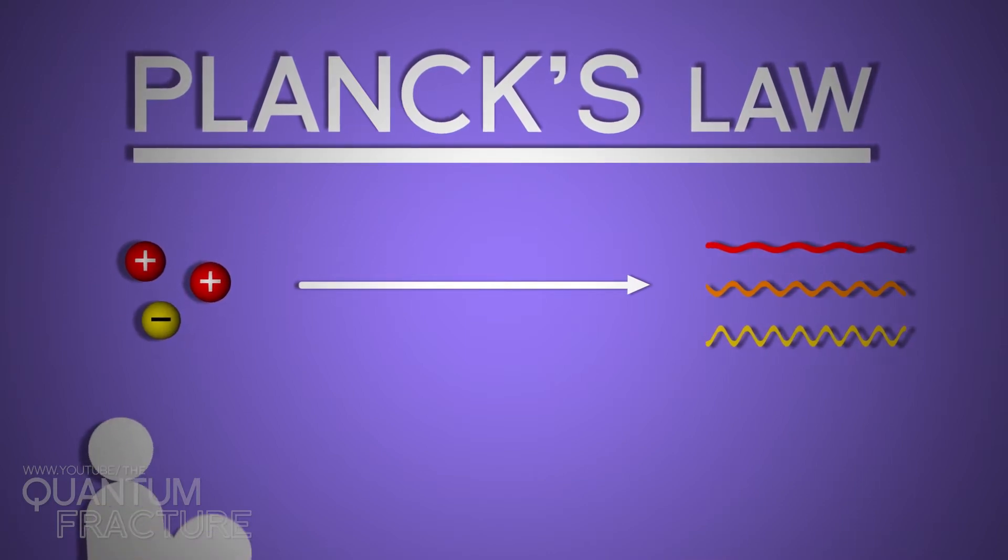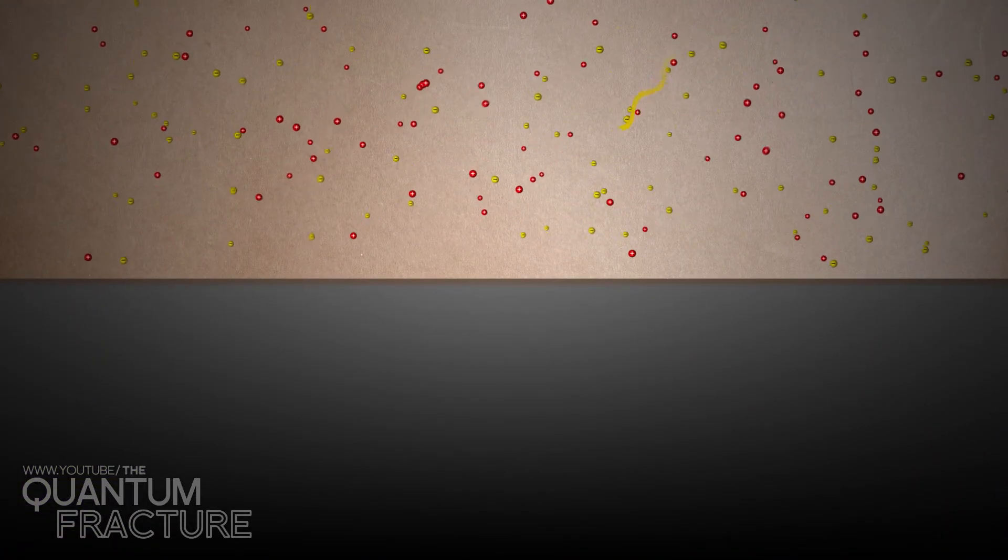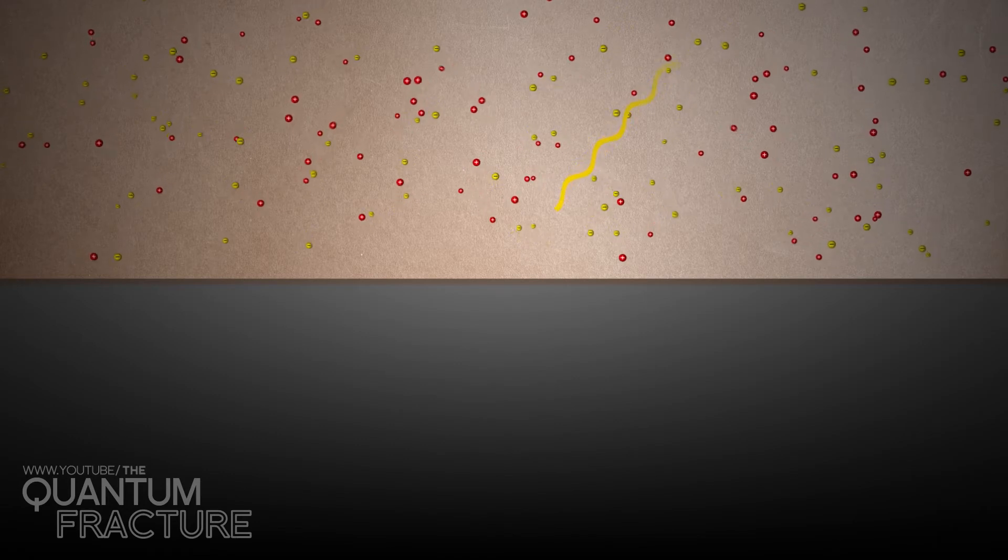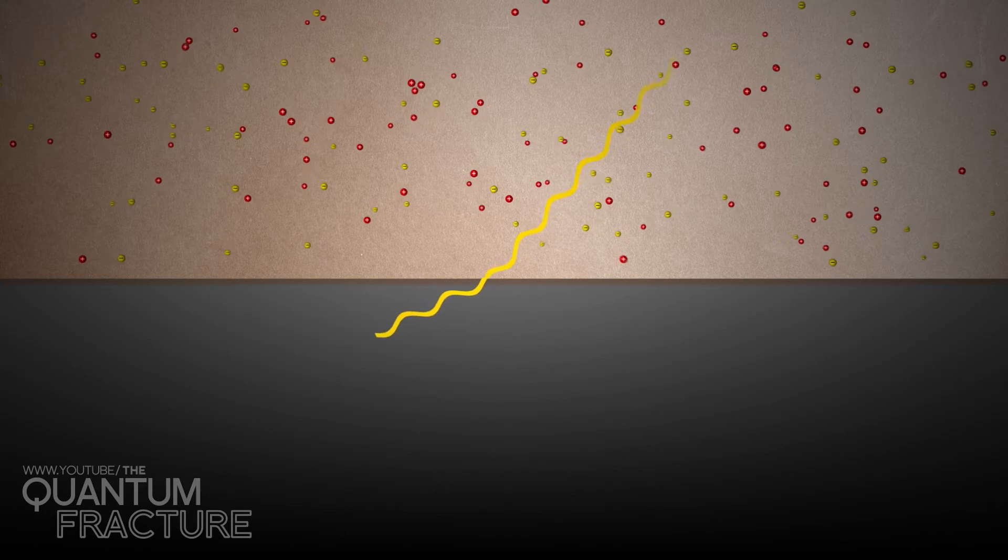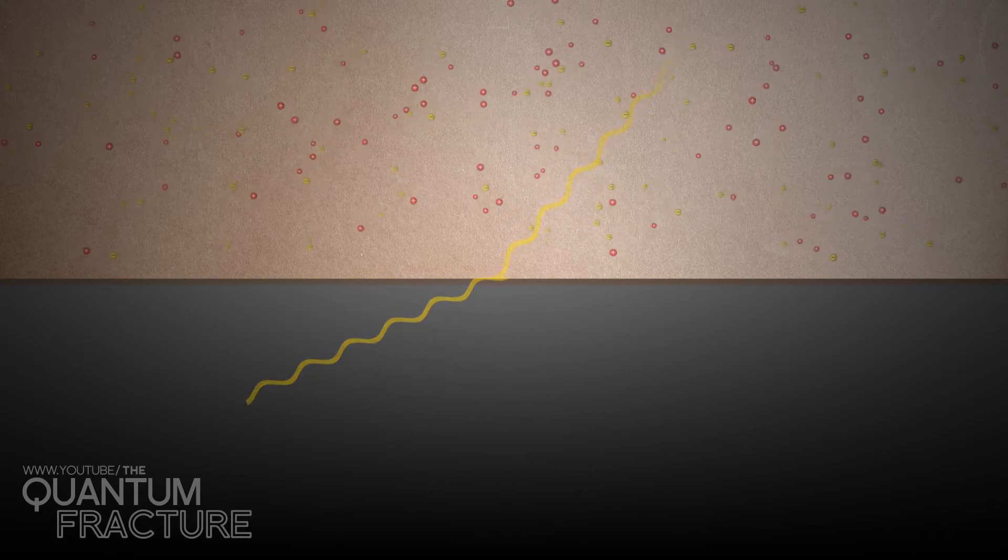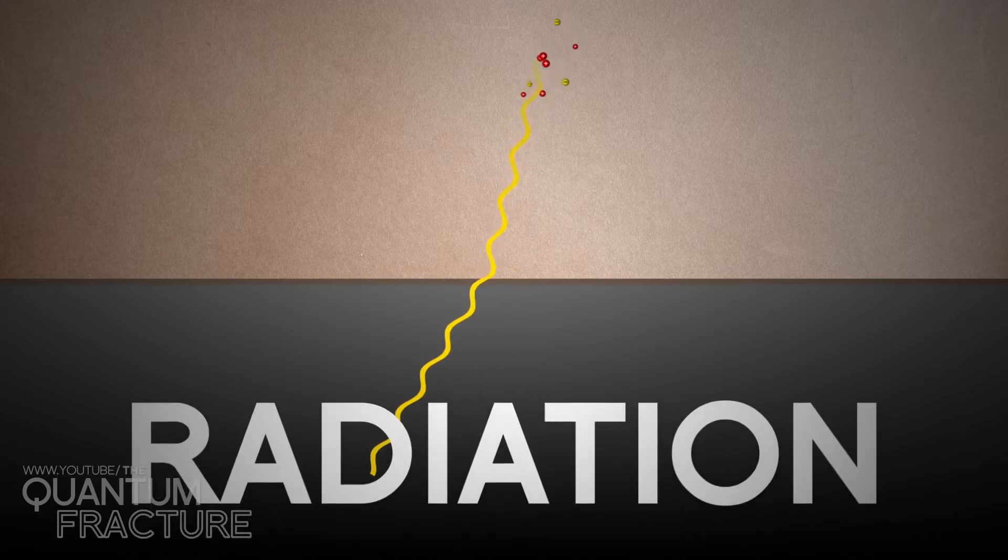Look, when an electromagnetic wave is generated inside an object and wants to get out, it has to contend with the interphase between the material and the air. If this wave travels more or less perpendicular to the surface, it will escape without a problem and will detect it as radiation.